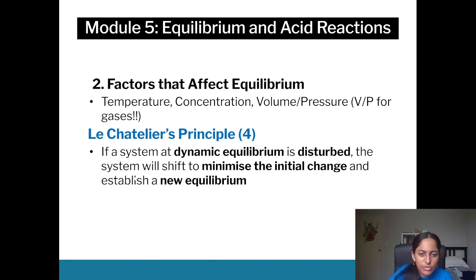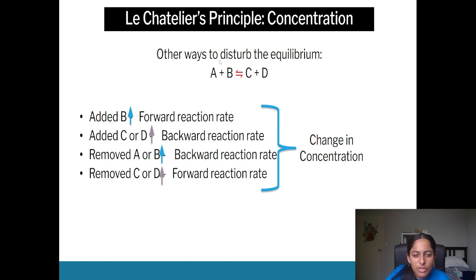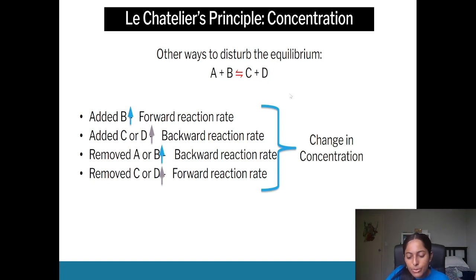For concentration in LCP: if you increase the concentration of a reactant, say B, by LCP the system wants to decrease that concentration, so it shifts right to produce more products. If you increase the concentration of a product D, it shifts left. For pressure: make sure you define the molar gas ratio. In this case, it's a 4 to 2 molar gas ratio. If you increase the volume, you decrease pressure, so the system shifts left toward the higher mole side to increase pressure.